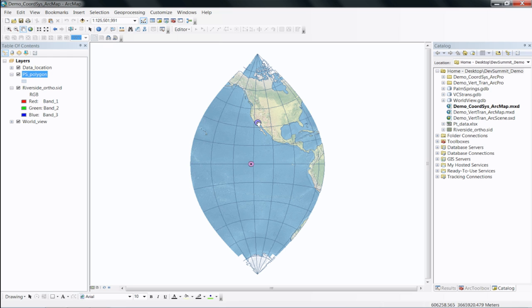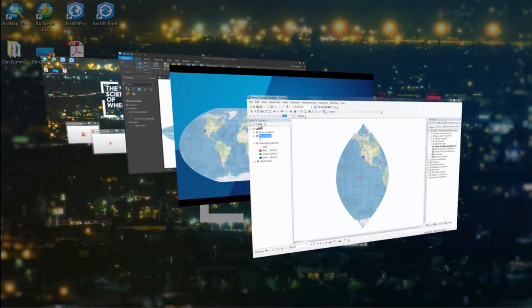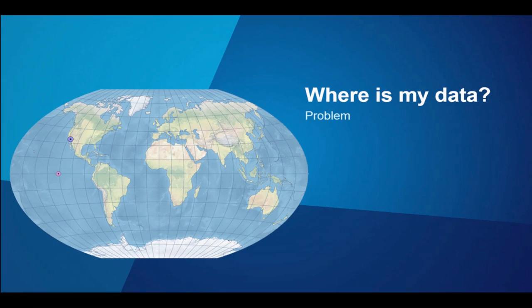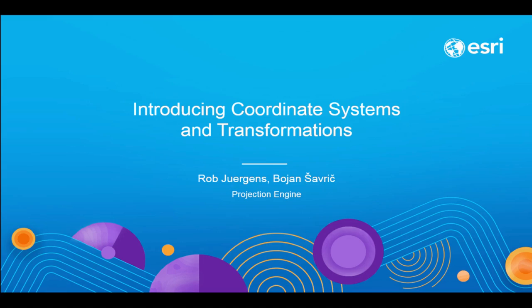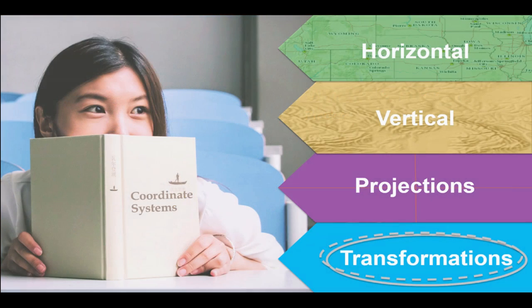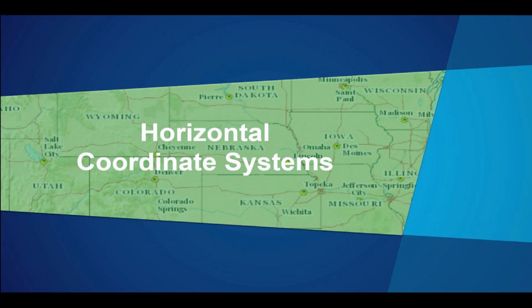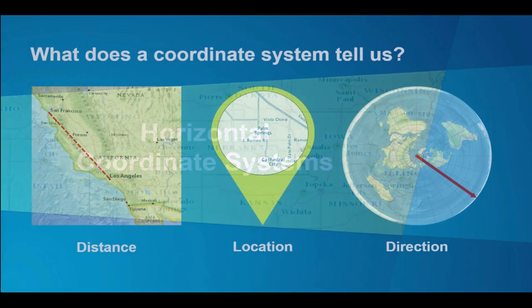To better understand what is going on exactly, let's take a look at what coordinate systems actually are and how we define them. We're going to discuss four different issues: horizontal coordinate systems, vertical coordinate systems, projections, and transformations. Let's start with horizontal coordinate systems.